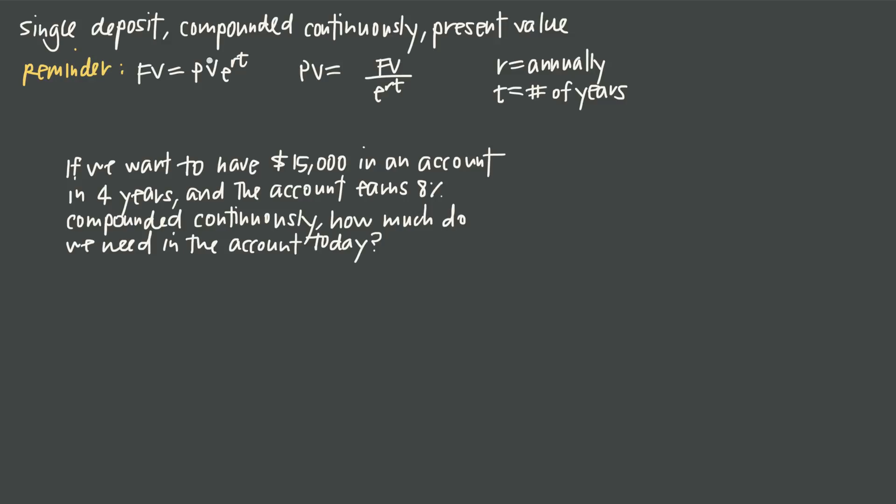So we referred to these formulas but let's look at them. This first one is a future value formula. It says future value equals present value times e raised to the rt. So in this case r is the rate, specifically the annual percentage rate, and t is time in years.